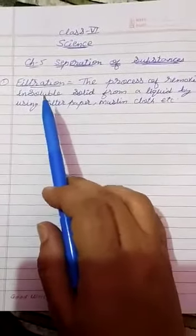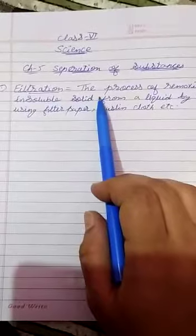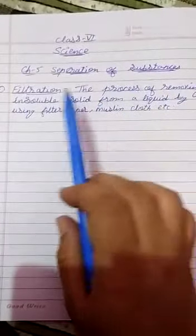The next method of separation that we are going to do is filtration. What is filtration? The process of removing insoluble solid from a liquid by using filter paper, muslin cloth, etc. That means we use this method for separation of insoluble solid particles from a liquid.